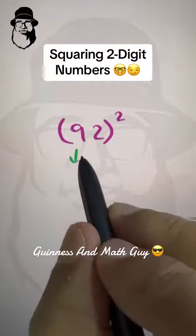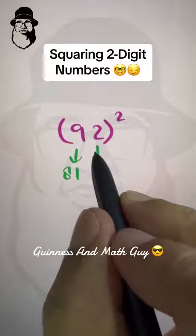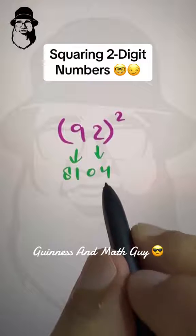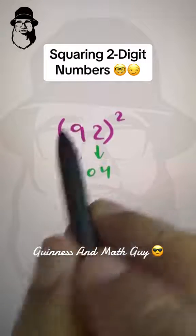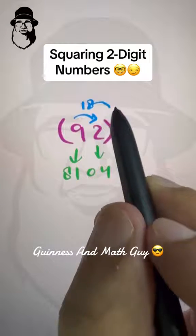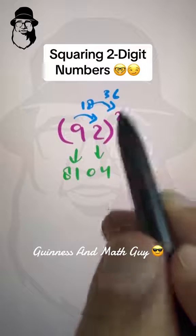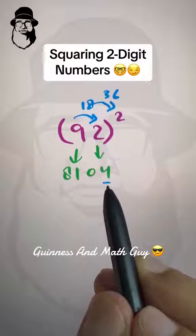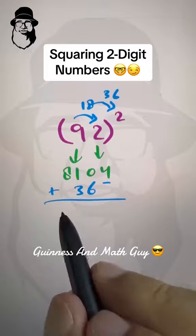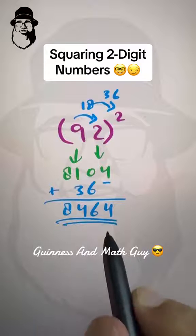Let's do this one. Square of 9 is 81, square of 2 is 4, but we write 04 because we have two spaces. Then 9 times 2 is 18, and 18 times 2 is 36. We leave one space from the right and write 36. Add them up: 8, 4, 6, 4 is the final answer.